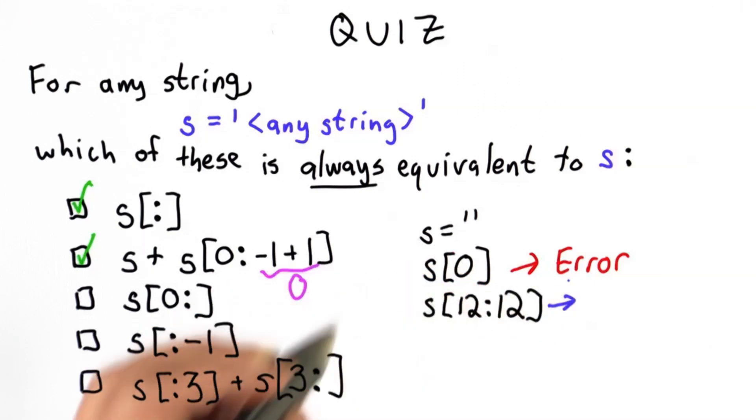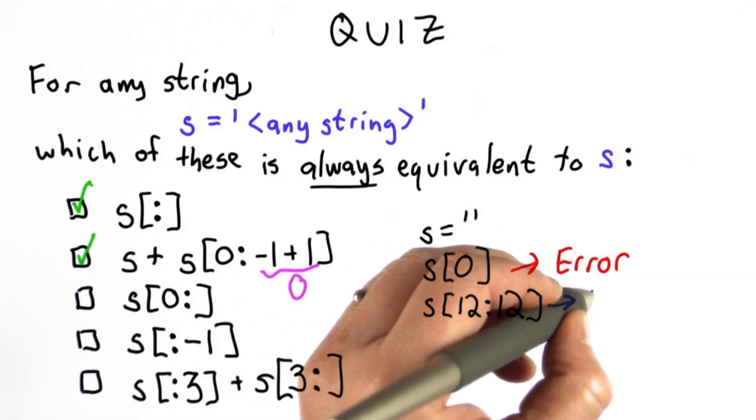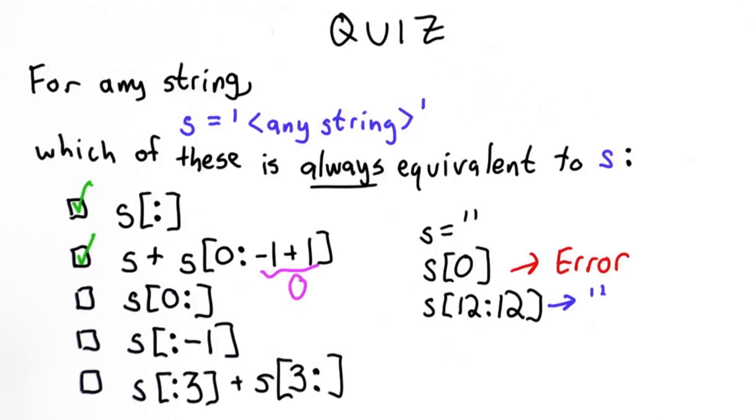But s[12:12], even though there's no twelfth character of s, since there are no characters between there, it's okay that s doesn't have them. That's going to evaluate to the empty string.